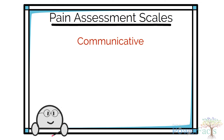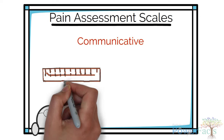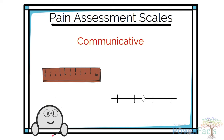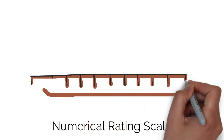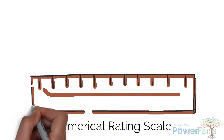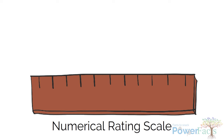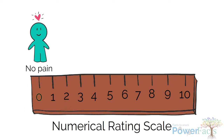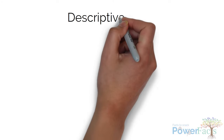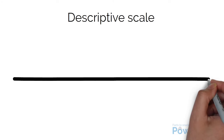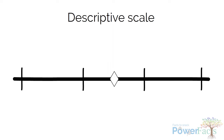For patients who are communicative, there are the Numerical Rating Scale and the Descriptive Rating Scale. The Numerical Rating Scale is commonly used for orientated patients who can quantify pain on a scale of 0 to 10, where 0 is no pain and 10 is the worst possible pain.